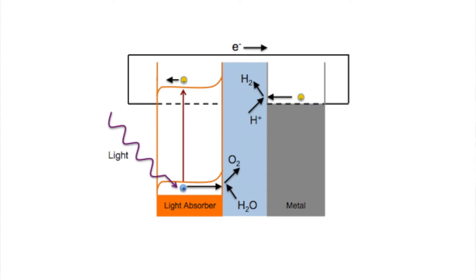The electron goes through an external circuit into the metal cathode, and then to the solution, where it reduces the proton to form hydrogen gas.